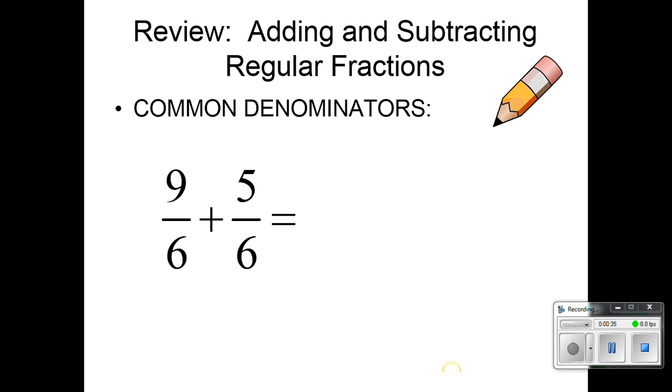So let's review adding and subtracting regular fractions with common denominators. If the denominator is the same we can go ahead and add the numerators. 9 plus 5 is 14 over 6 and then we know that 2 times 7 is 14, 2 times 3 is 6, the 2's cancel and we have 7 over 3.